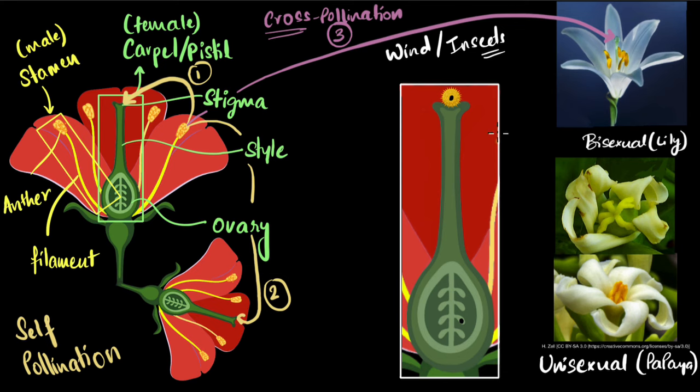Well, for that, the pollen grain germinates. And there's a tube that comes. And the tube eventually finds its way towards the egg cells.